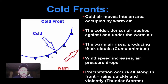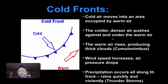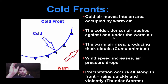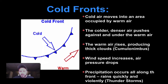Cold fronts have the blue line with the little triangles on it. Sometimes I think of them as icicles, so it helps you remember that they're cold. Basically, cold air is going to move into an area occupied by warm air. The cold air is more dense and pushes against and underneath the warm air, hugging the ground. When it comes in, it forces that warm air up — warm air rises. This is going to produce thick clouds, and wind speed increases because now we have a greater difference in pressure.